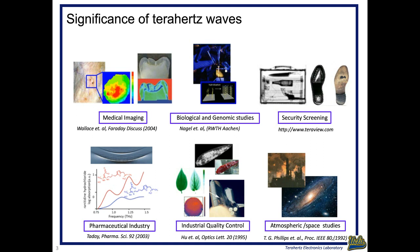In the biological domain, a lot of interesting potentials have been introduced — for example, for genome sequencing and for understanding dynamics of a lot of cellular functions. Security screening has been one domain that, in early days, brought a lot of funding to this field — basically seeing inside packages, seeing through clothing, or identifying different kinds of hazardous materials and explosives.